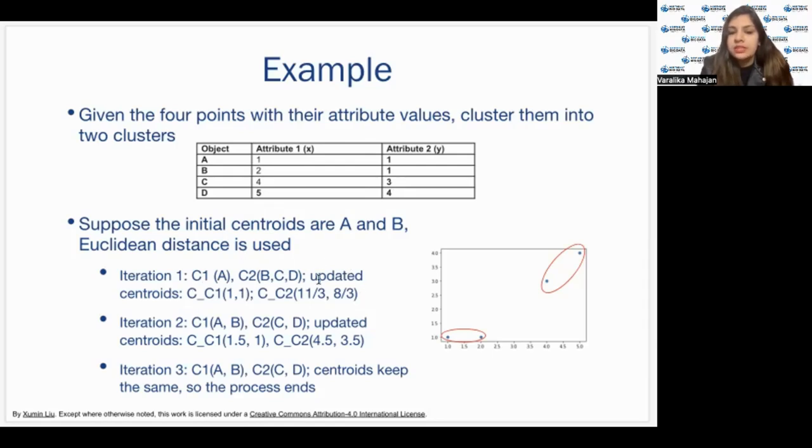Now, we do the same process again. We calculate the Euclidean distance of A from cluster 1 and cluster 2. Whichever is the minimum value, we assign it to that cluster. Again, now, the clusters, we update. In cluster 1, we get A, B. In cluster 2, we get C, D. So, we re-compute our centroids and this time, we get 1.5, 1, 4.5, 3.5 and we do another iteration.